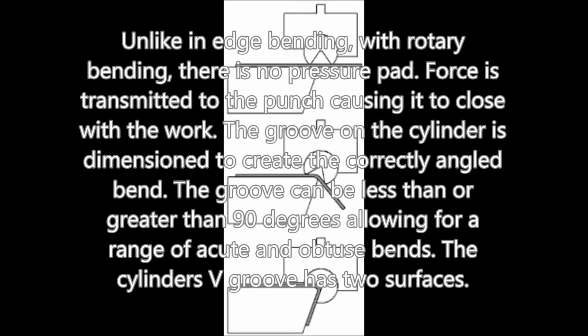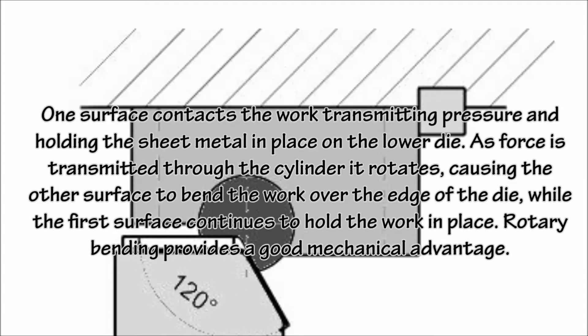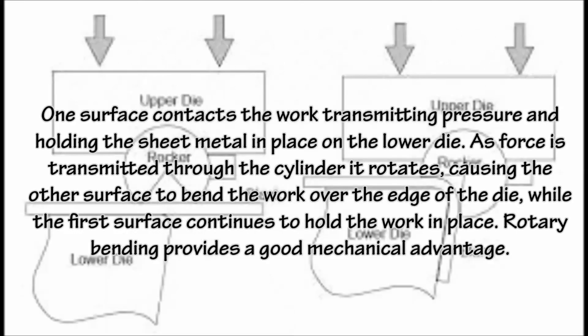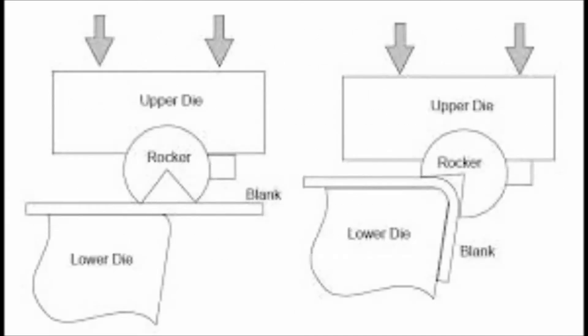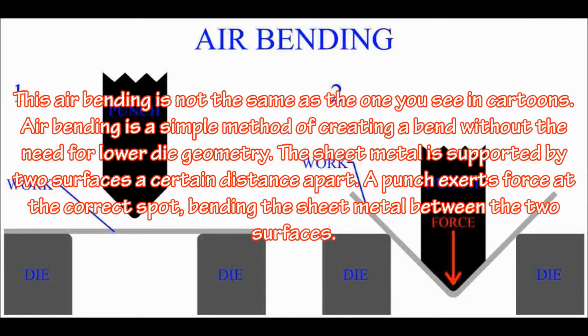The groove on the cylinder is dimensioned to create the correctly angled bend. The groove can be less than or greater than 90 degrees, allowing for a range of acute and obtuse bends. The cylinder's V-groove has two surfaces: one surface contacts the work, transmitting pressure and holding the sheet metal in place on the lower die. As force is transmitted through the cylinder, it rotates, causing the other surface to bend the work over the edge of the die while the first surface continues to hold the work in place. Rotary bending provides a good mechanical advantage.